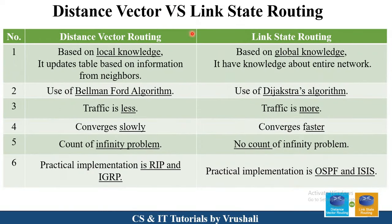There is a basic difference between distance vector and link state routing. Distance vector routing is based on local knowledge — it finds distance only for neighbor nodes. Link state routing is based on global knowledge — it finds information about the entire network. Distance vector uses the Bellman-Ford algorithm; link state uses Dijkstra's algorithm. Traffic is less in distance vector and more in link state, since all nodes are linked. Distance vector converges slowly; link state converges faster. Distance vector has the count-to-infinity problem; link state does not. Distance vector uses RIP and IGRP protocols; link state uses OSPF and IS-IS protocols.